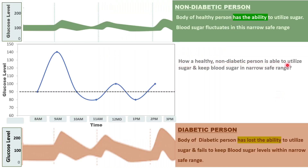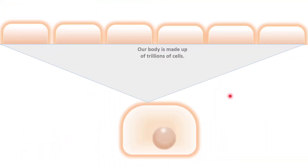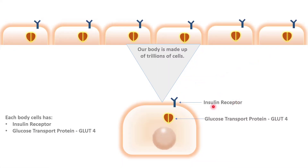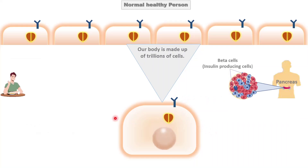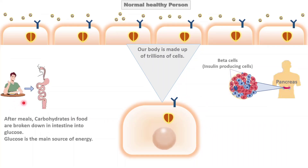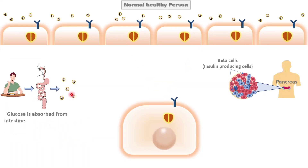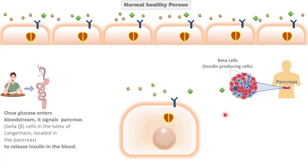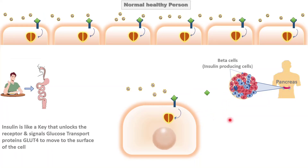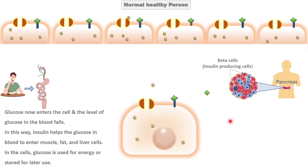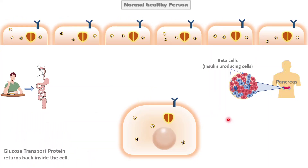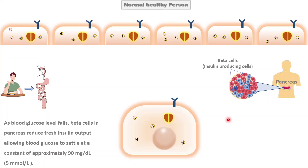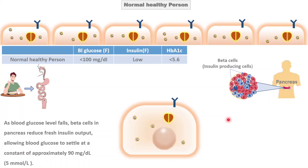How does a healthy, non-diabetic person utilize sugar and keep blood sugar in a safe range? The body is made up of trillions of cells. Each cell has an insulin receptor and a glucose transport protein. After meals, carbohydrates — starch and sugar — are digested in the intestine into glucose and the glucose enters the blood. At the same time, insulin-producing beta cells in the pancreas start producing insulin. Insulin binds to the insulin receptor and signals the glucose transport protein, which moves to the surface of the cell. Glucose enters the cell. After some time, the effect of insulin wanes and the glucose transport protein returns back into the cell. As blood glucose level falls, beta cells stop producing further insulin, allowing the blood sugar level to settle at a constant of approximately 90 mg per deciliter. In a normal person, the blood sugar level is less than 100 mg per deciliter and the insulin level is low.